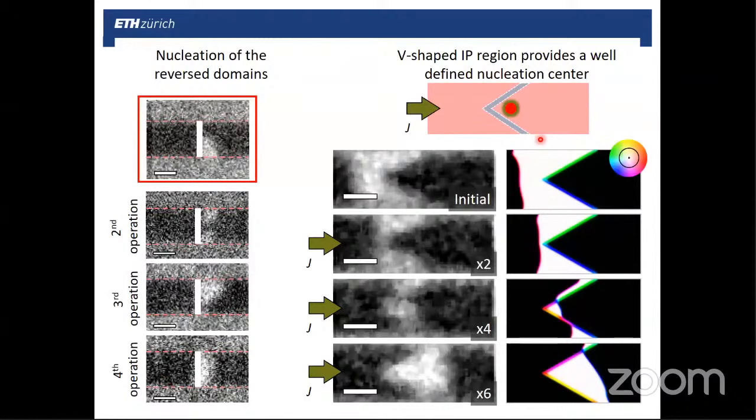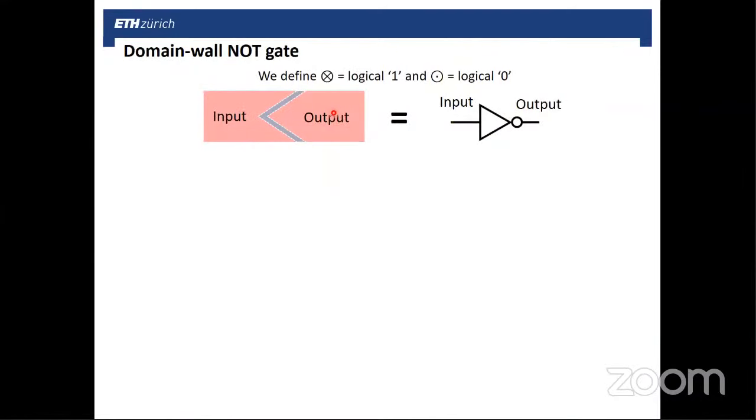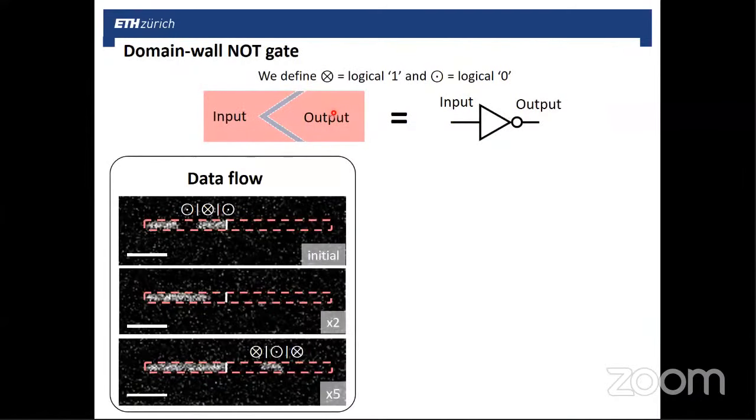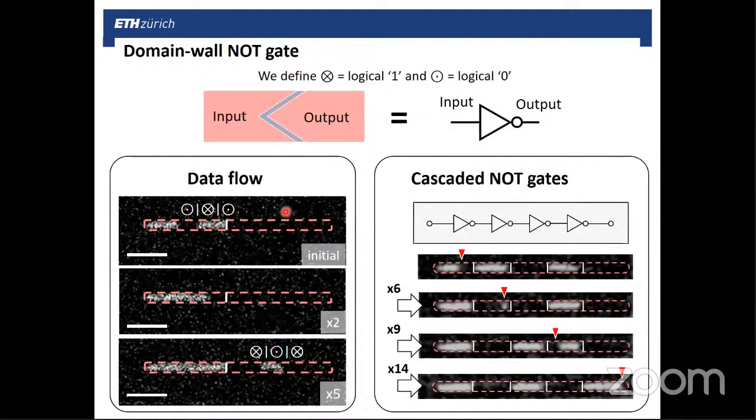So this eventually achieves domain wall inversion. One can also make it more efficient by patterning the in-plane-shaped region in the form of a V. Okay. And when this is the case, then the rotation point is always fixed at the apex of the V. That's the most unstable point. This makes the domain wall inversion process always occurring at the same time, and it's also fast. This allows to invert sequences of domains, as you see here. So we have white, black, white, and then we pulse the system with current. At the end, we have black, white, black.